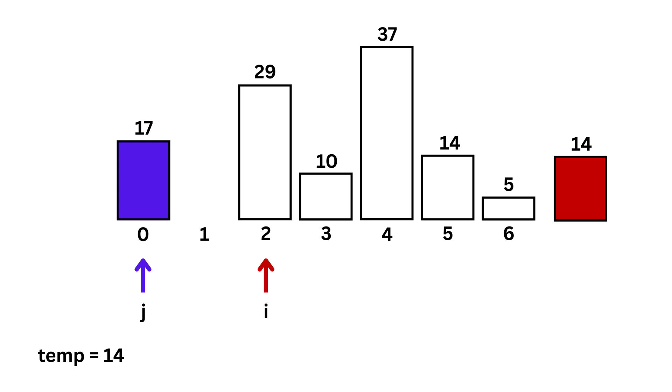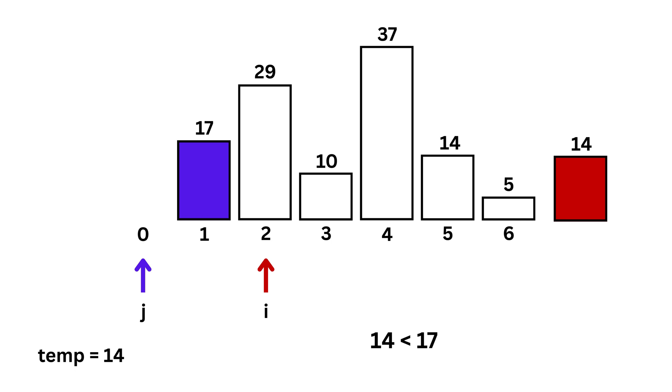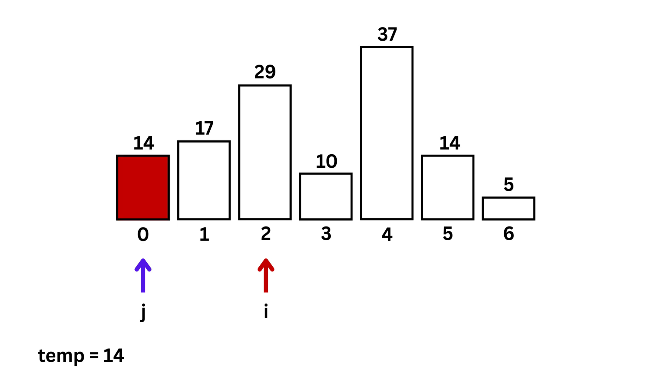Then, we again compare the value at temp with the value at position j. Since 14 is again smaller, we shift 17 to the right by one step. Since j is at the start, it cannot move left any further.